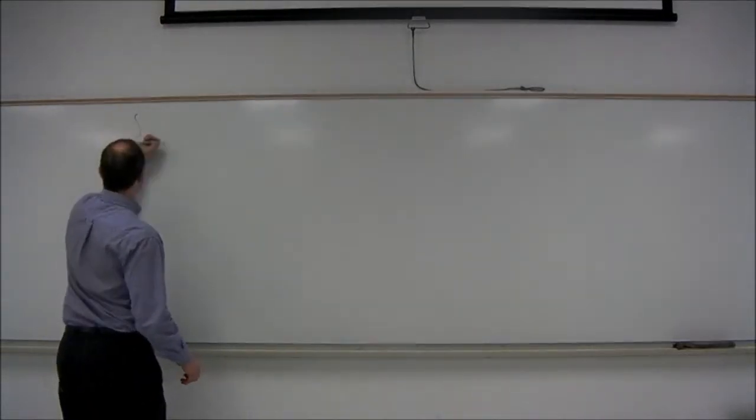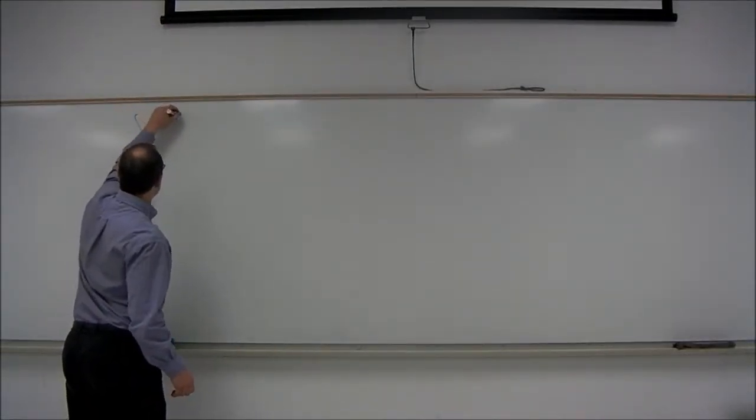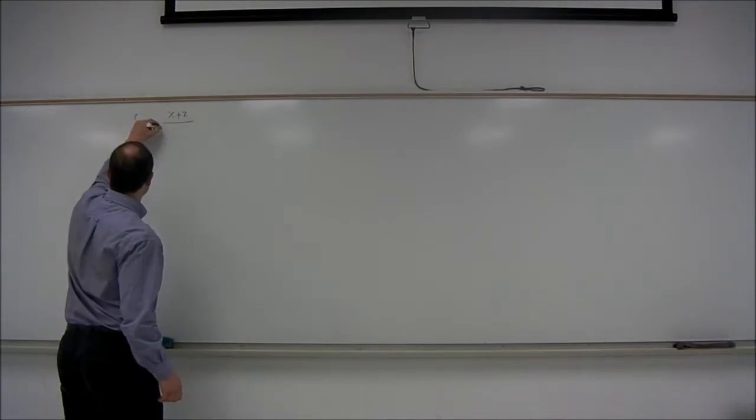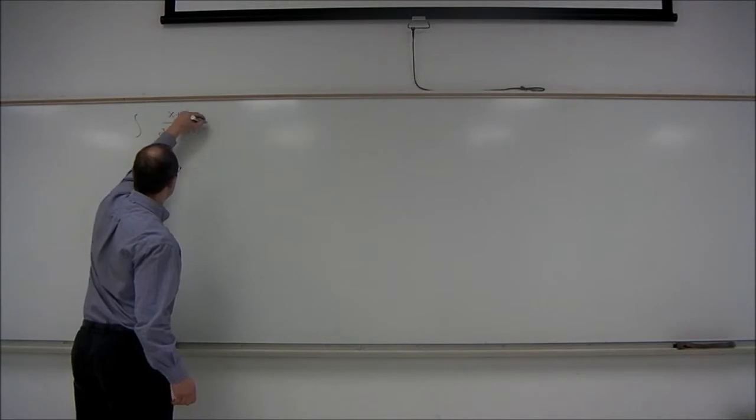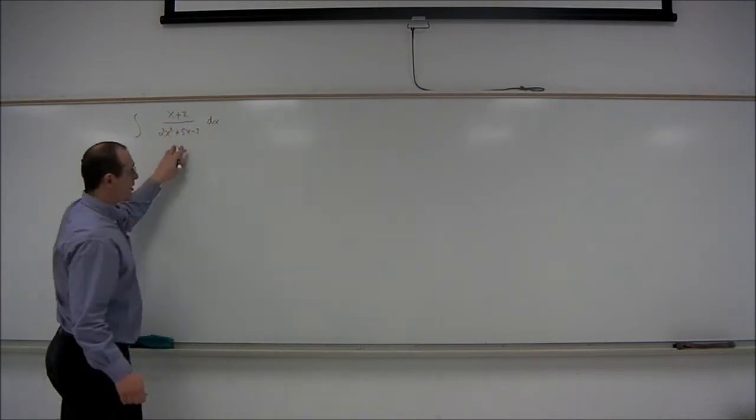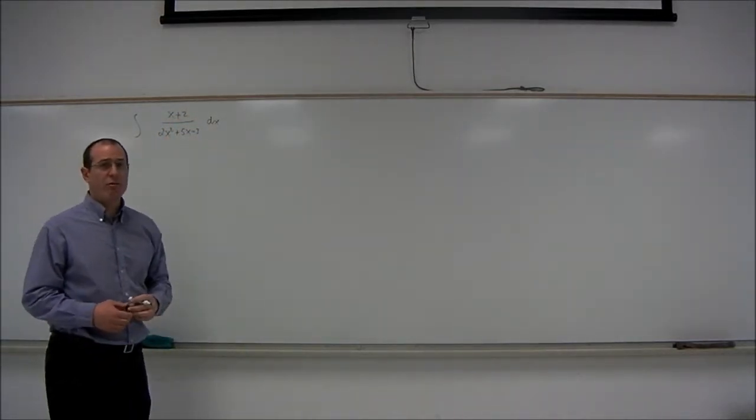So the problem is to integrate x plus 2 divided by 2x squared plus 5x minus 3 dx. This is an example of what's called a rational function.